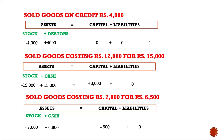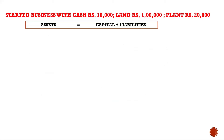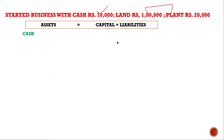Moving ahead: started business with cash, land, and plant. It can also happen that a businessman brings things in kind instead of only cash — he also brings some assets. In this case, cash of 10,000, land of 1 lakh, and plant of 20,000 all came in, and the total will be the capital. Liabilities are zero.